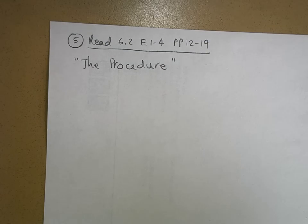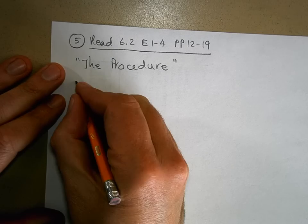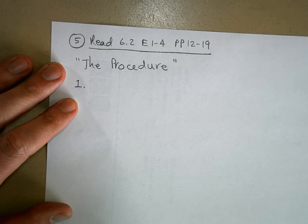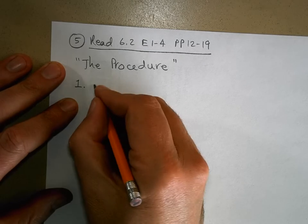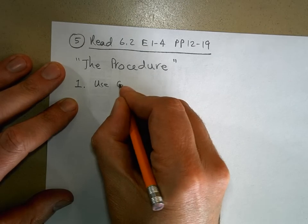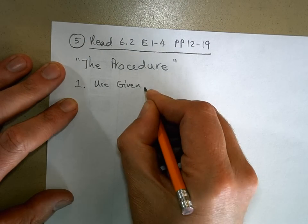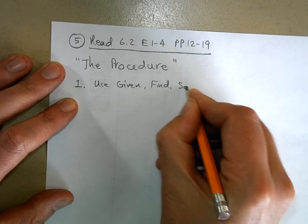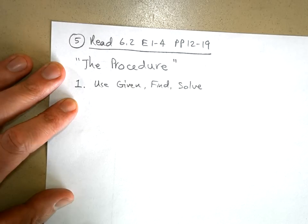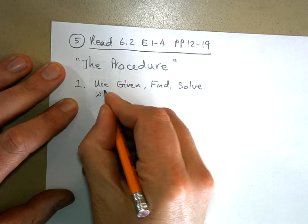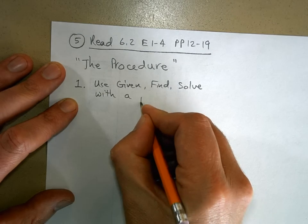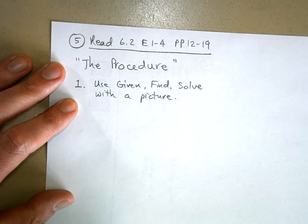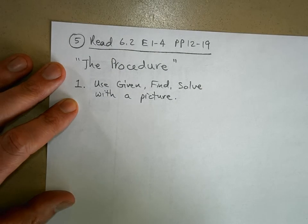So I'm going to give you a problem, and the first step of the procedure is to use given, find, and solve — with a picture of the problem. I want you to draw a picture of the problem.